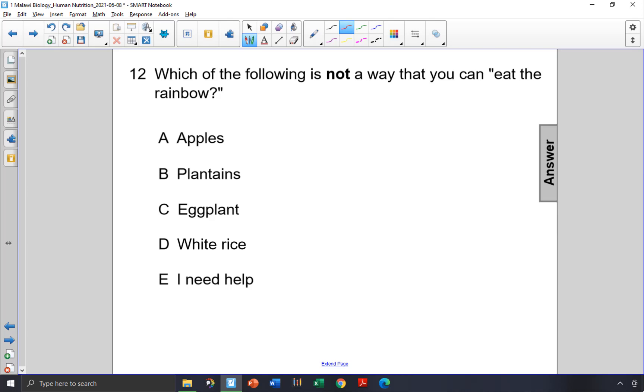Which of the following is not a way that you can eat the rainbow? Choice A, apples.